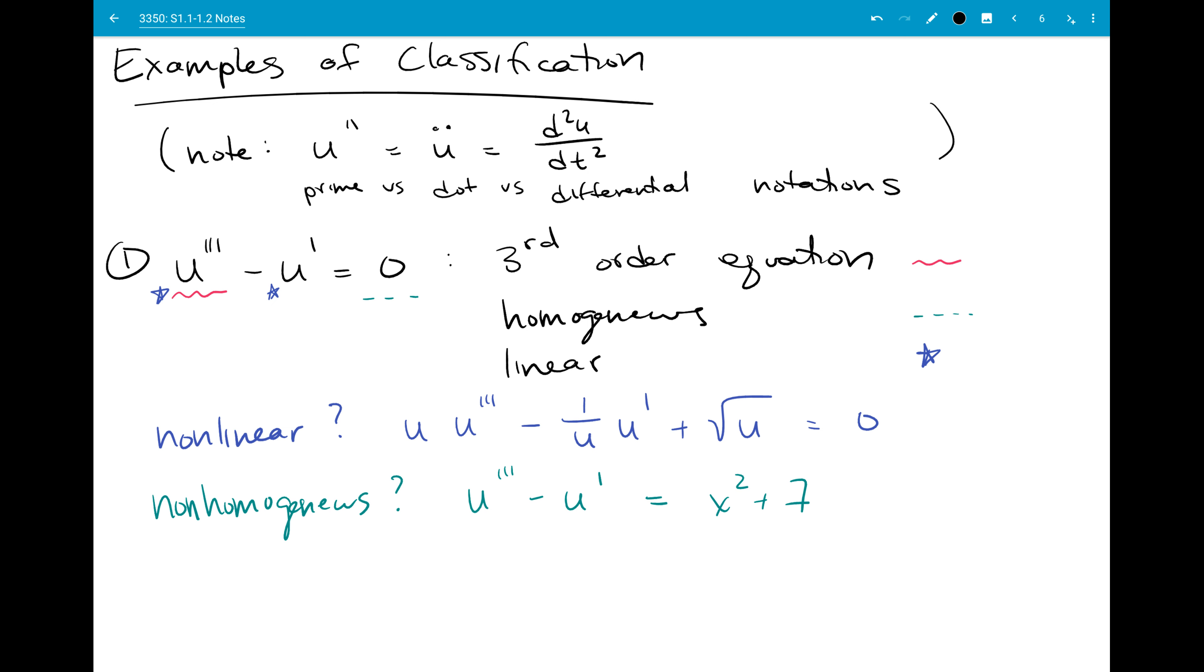And we'll do a couple more examples just to build more intuition, but I'll go a bit more quickly through these. I won't do the different color coding. Hopefully we have a good feeling for where all the different parts came from now. So, for example, u du dx equal to zero, so I see one derivative, so that's first order. I see nothing on the right-hand side, so it's homogeneous still. But now I have that mixing between u and its derivatives, so I know that this is non-linear.